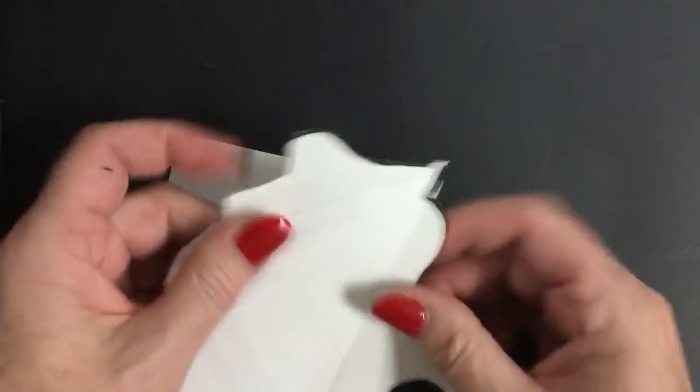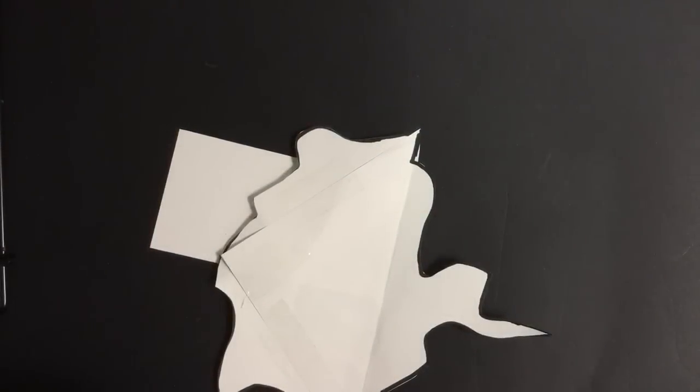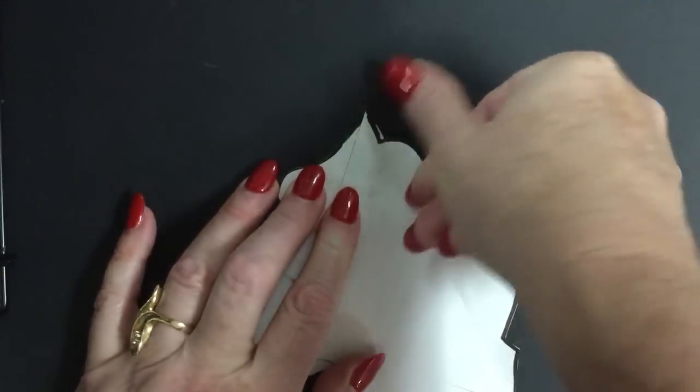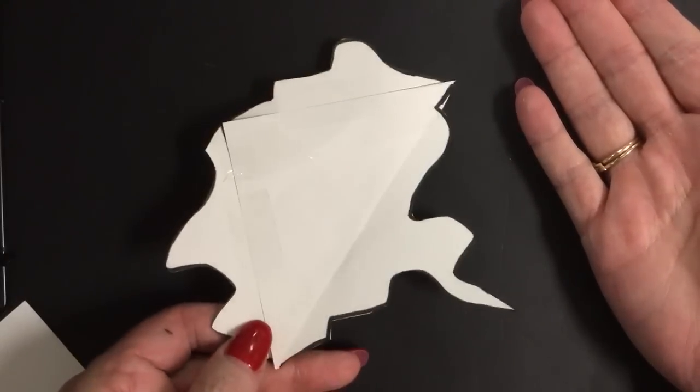Now if you need to reinforce, if this is lifting up here, add a little bit more tape. Just a real small piece. You want it to be secure because you're going to use this as your template for tracing. Now I have my tessellation shape. This is what will form my design.